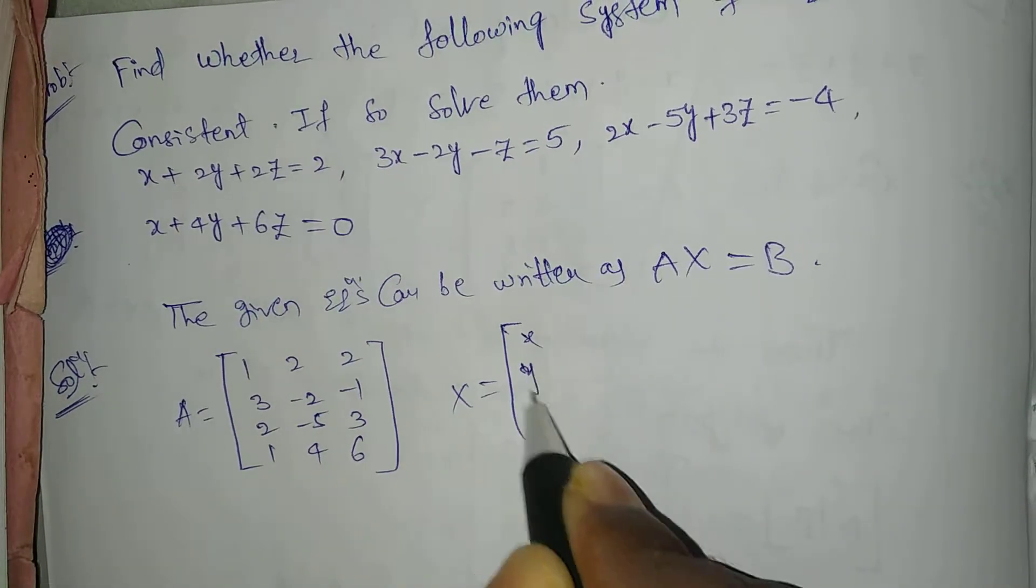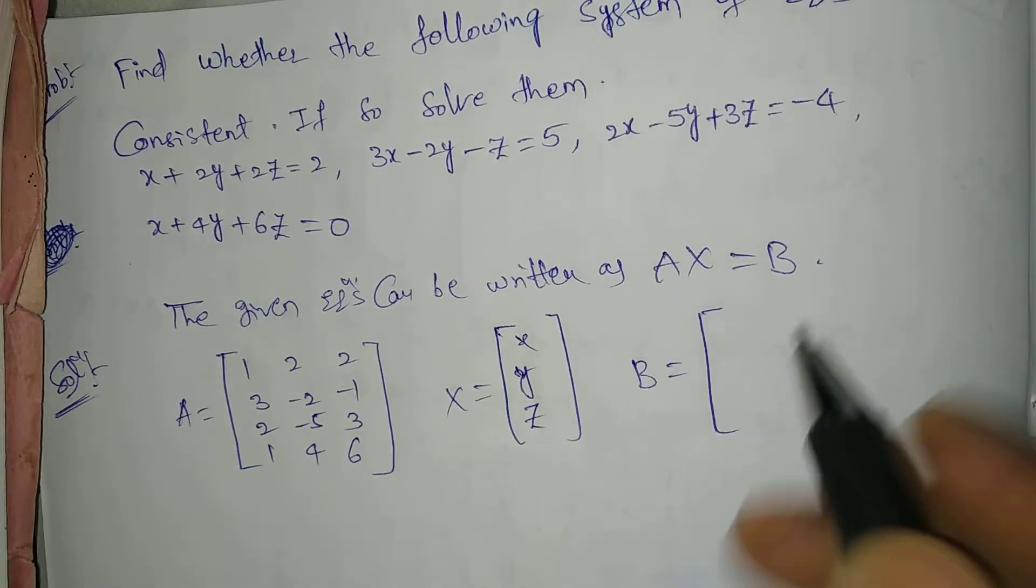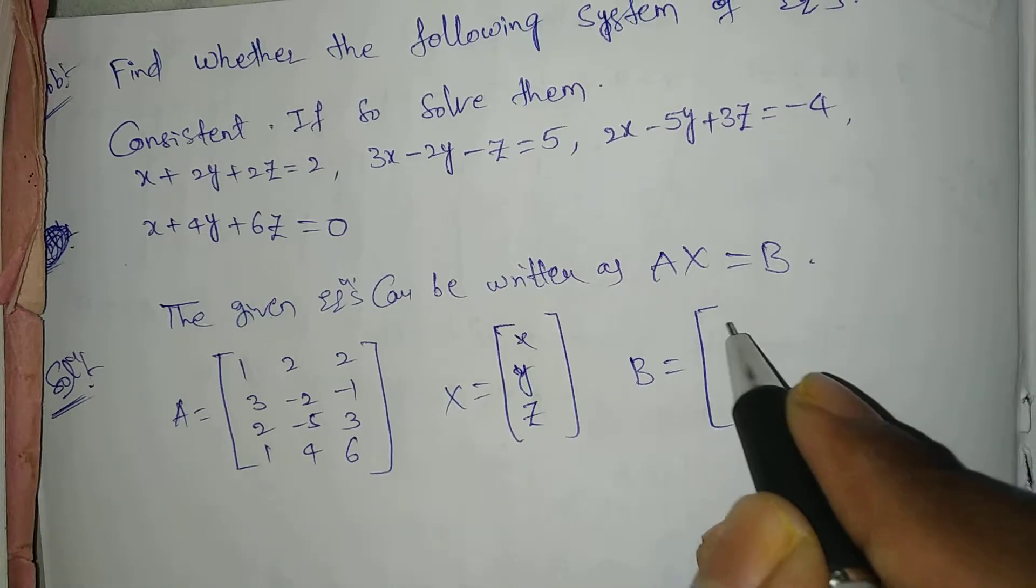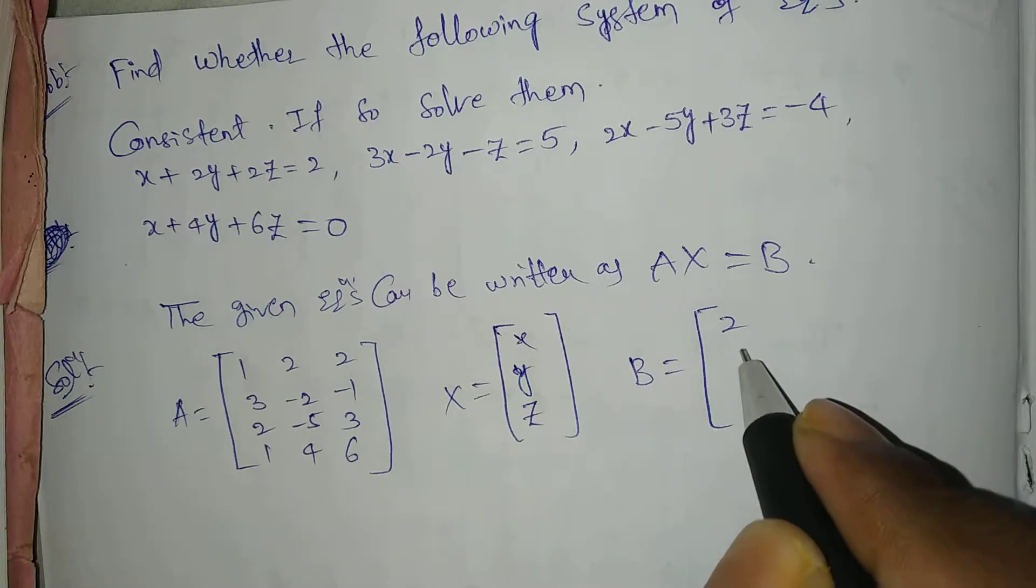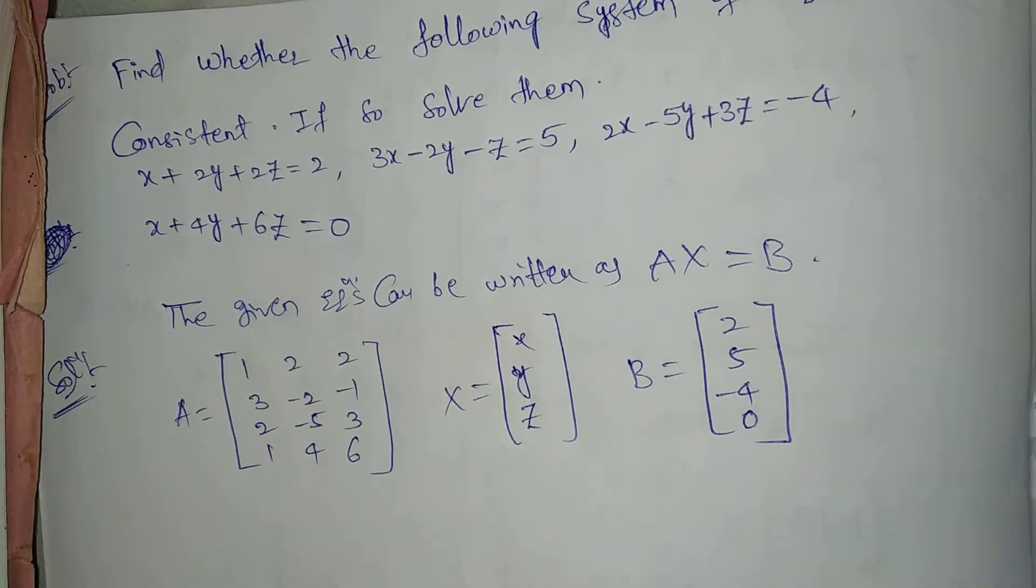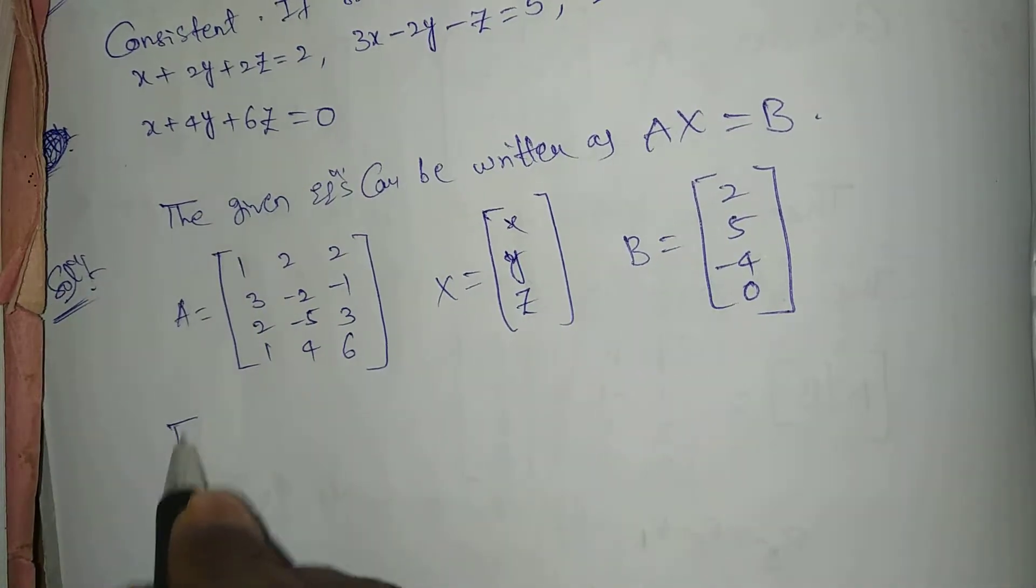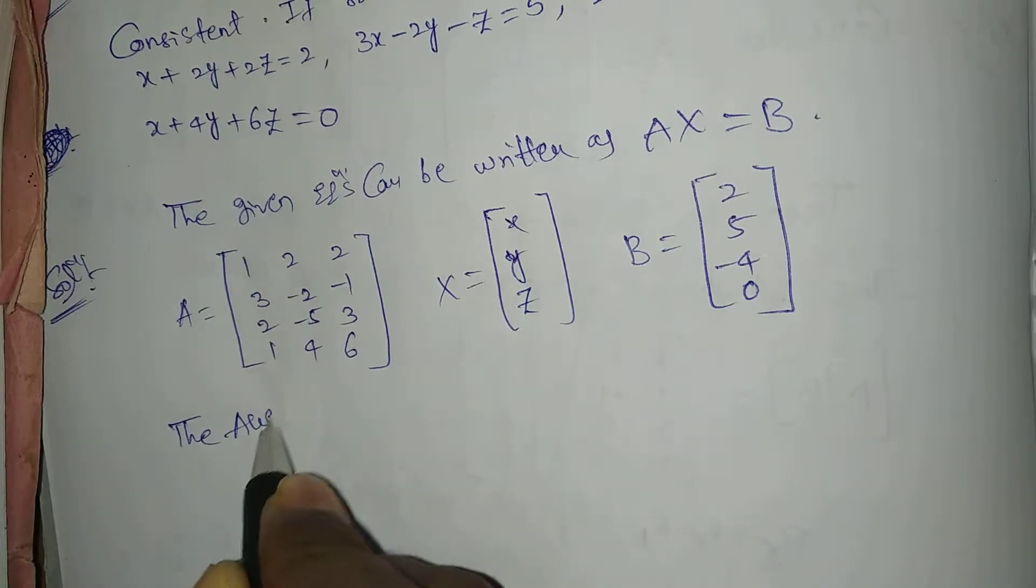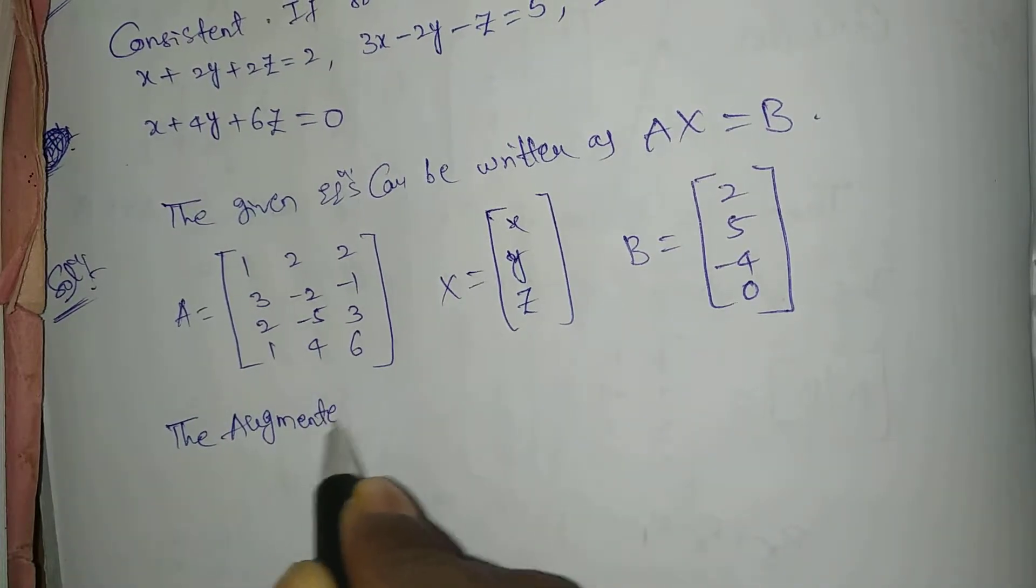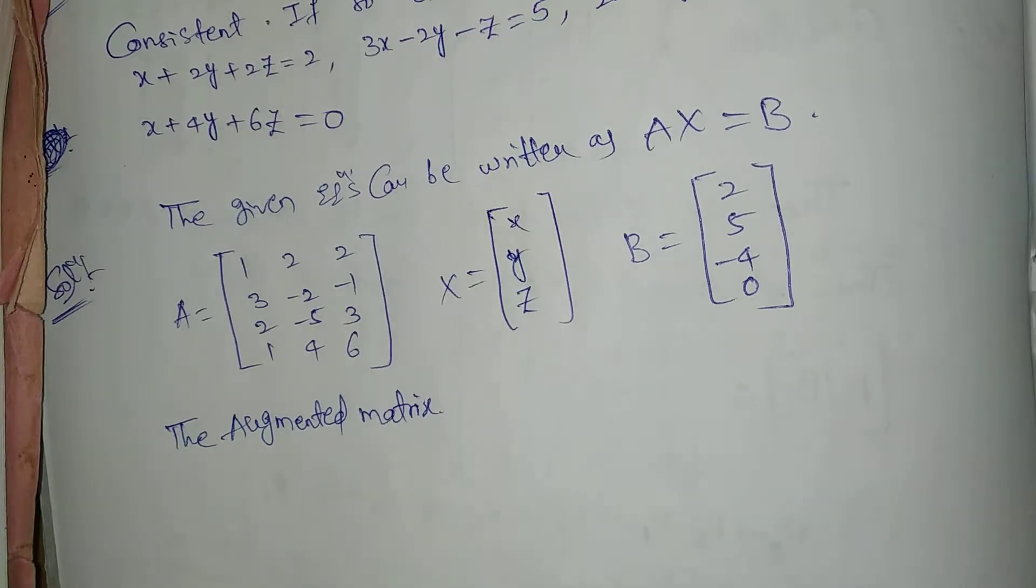Next, x, y, z. Next, B matrix. B equal to 2, 5, minus 4, 0. Now, here, the augmented matrix.